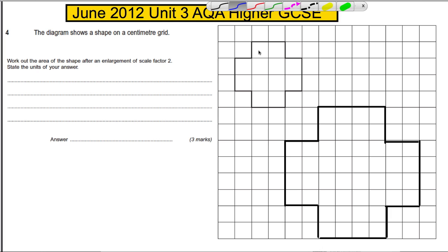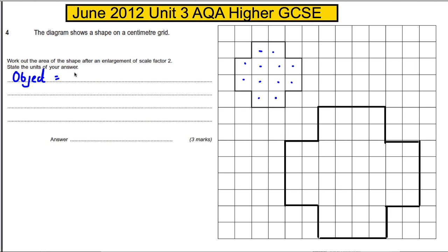Here is a picture. Counting the squares: 1, 2, 3, 4, 5, 6, 7, 8, 9, 10, 11, 12. So the object has an area of 12 centimetres squared.